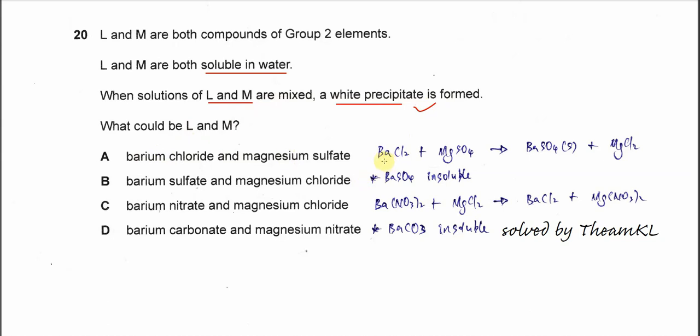From here we know that barium chloride is soluble in water, magnesium sulfate also soluble in water. When these two solutions mix it will form barium sulfate which is insoluble in water and it will form white precipitate. So barium sulfate is a white precipitate together with magnesium chloride which is soluble in water. So this one fits the statement.